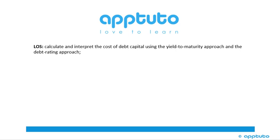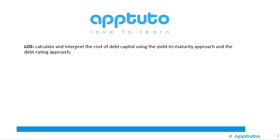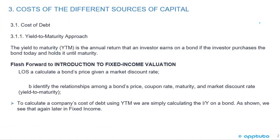This LOS is to calculate and interpret the cost of debt capital using the yield to maturity approach and the debt rating approach. We'll be looking at the costs of different sources of capital, starting with the cost of debt using the yield to maturity approach.